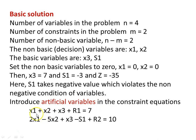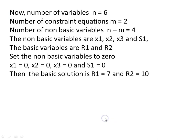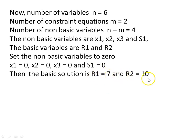Introducing artificial variables: first constraint becomes x1 plus x2 plus x3 plus r1 equal to 7, and the second becomes 2x1 minus 5x2 plus x3 minus s1 plus r2 equal to 10. r1 and r2 are called artificial variables. Now the number of variables n equals 6, number of constraints m equals 2, and number of non-basic variables is 4. Non-basic variables are x1, x2, x3, and s1; basic variables are r1 and r2. Setting non-basic variables to 0 gives r1 equal to 7 and r2 equal to 10 — all variables are now non-negative, so the condition is satisfied.